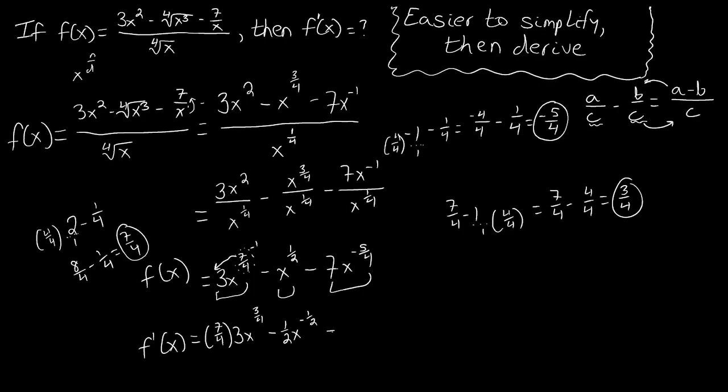For our last term, we're going to bring down the power, negative five-fourths times seven x, but then here, negative five-fourths minus one turns into negative five-fourths minus four over four, which gives us negative nine-fourths. So the new power for this term is negative nine-fourths.